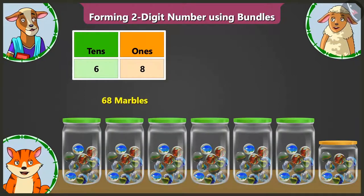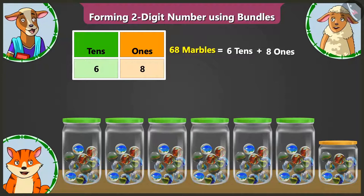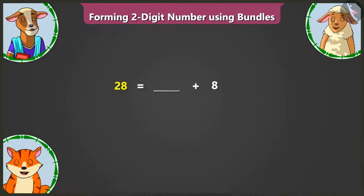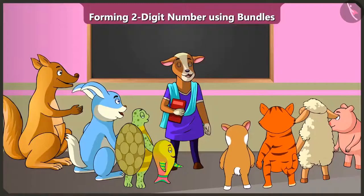Yes, well done. Now look, children — I will teach you how to expand sixty-eight into two parts. Sixty-eight has six tens and eight ones. So six tens means we have to write sixty, and eight ones means we have to write eight. Come on, Lily — now try to expand and tell the numbers written here on the board. Twenty-eight has two tens and eight ones, so twenty-eight's expansion is twenty and eight.